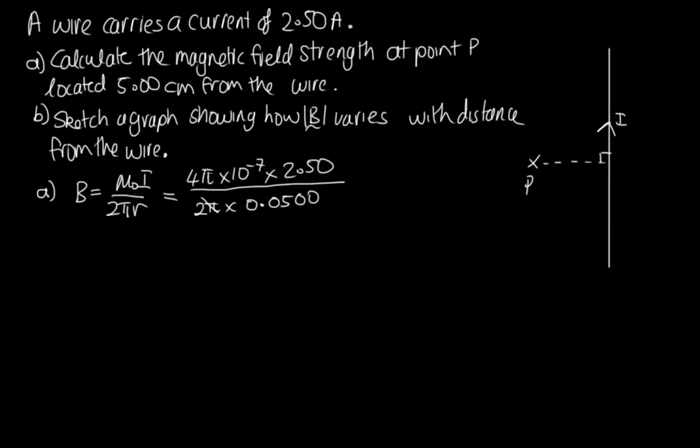So let's cancel out this π. We can cancel out one of these factors of 2 as well. And now we need to solve it on the calculator. So we've got 2 times 2.5, so 5 times 10 to the minus 7 divided by 0.05. And that gives us 1.00 times 10 to the minus 5 teslas.